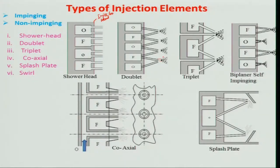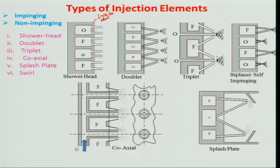In order to overcome that problem, the triplet is used: the oxidizer comes in the center and fuel comes from two sides. It can be used for hypergolic propellant. If one of the momenta is higher, it will go a little away, but you can manage that. Liquid phase combustion will be taking place, and it will be compact and nearby.